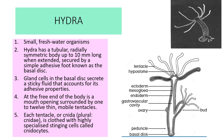First is Hydra — a small, freshwater organism. It has a tubular, radially symmetrical body with an adhesive foot known as the basal disc. Gland cells in the basal disc secrete a sticky fluid accounting for its adhesive property. At the free end is a mouth surrounded by 1 to 12 thin mobile tentacles. Each tentacle is clothed with highly specialized stinging cells called cnidocytes. It reproduces by the formation of buds.